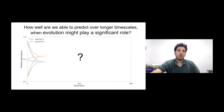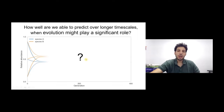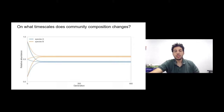Here I'm showing a cartoon example where two species equilibrate fairly rapidly to some sort of ecological equilibrium. We want to know whether we're able to predict what happens over subsequent generations. Surprisingly, we know very little about the dynamics of microbial communities during co-evolution — for example, we don't even know over what timescales community composition changes.